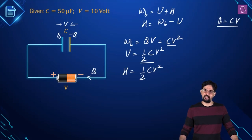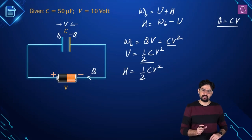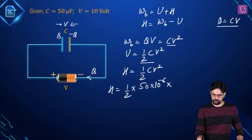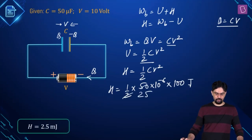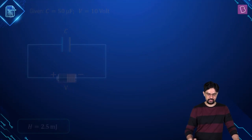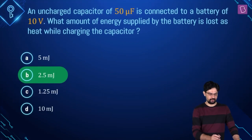Substituting values: heat = ½ × 50×10⁻⁶ × (10)² = ½ × 50×10⁻⁶ × 100 = 2.5 millijoules. This is also equal to the energy stored in the capacitor. Option B is the correct answer.